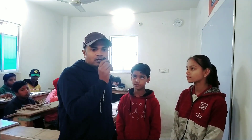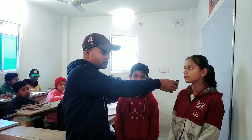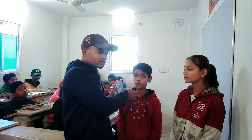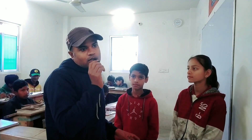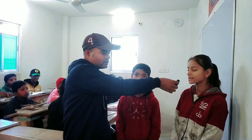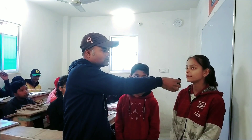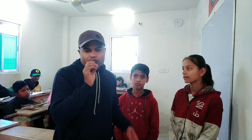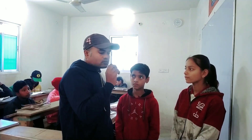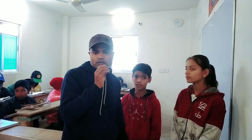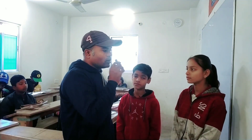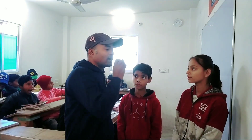Kya uske paas das rupay tha — Did he have ten rupees? Uske paas kal panch sau rupay tha — He had 500 rupees yesterday. Pichle mahine mein uske paas das guriyah thi — Last month he had five dollars. Kya tumhaare paas kitab thi? — Did you have books? Tumhaare paas kis tarah ki kitab thi? — What sort of book did you have? Mere paas story books thi — I had story books.